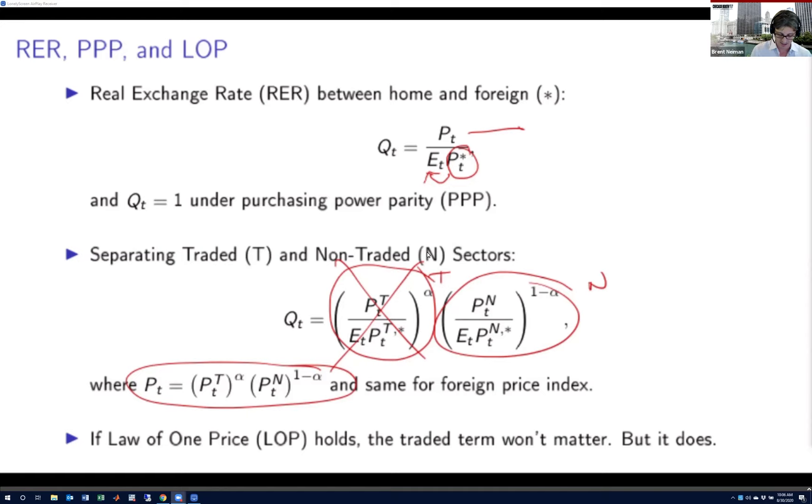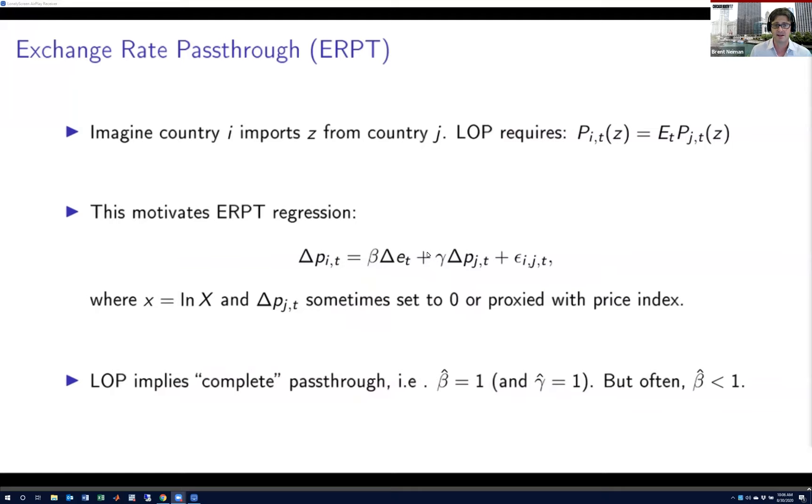If you focus just on that traded sector and think about a typical pass-through relationship, what you probably have in mind is this idea that the price of some good Z in country I—let's imagine country I is the US, so the US dollar price at time T of that good Z—you want to relate it. Under the law of one price, it would exactly equal that foreign price in country J of that good Z translated into dollars by multiplying it by E.